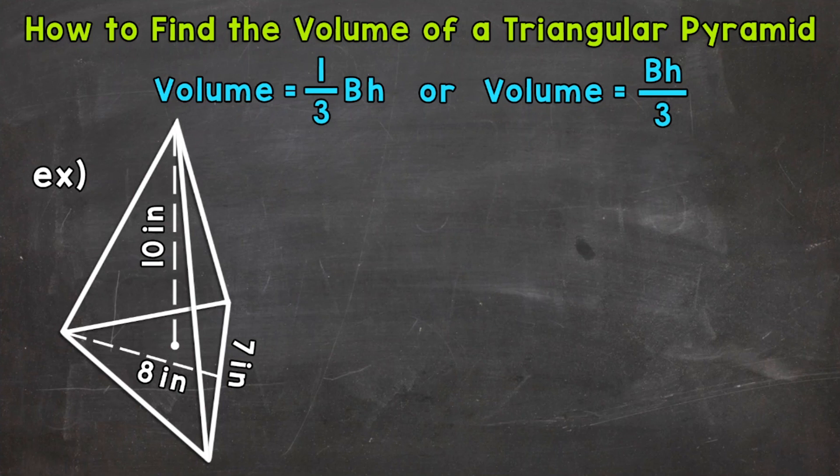Now, when it comes to pyramids, we can use the formula 1 third times the area of the base times the height. So whatever the base is, a rectangle, a square, in the case of this video, a triangle, find the area of that base using the correct formula, and then plug that area into the formula for the volume.